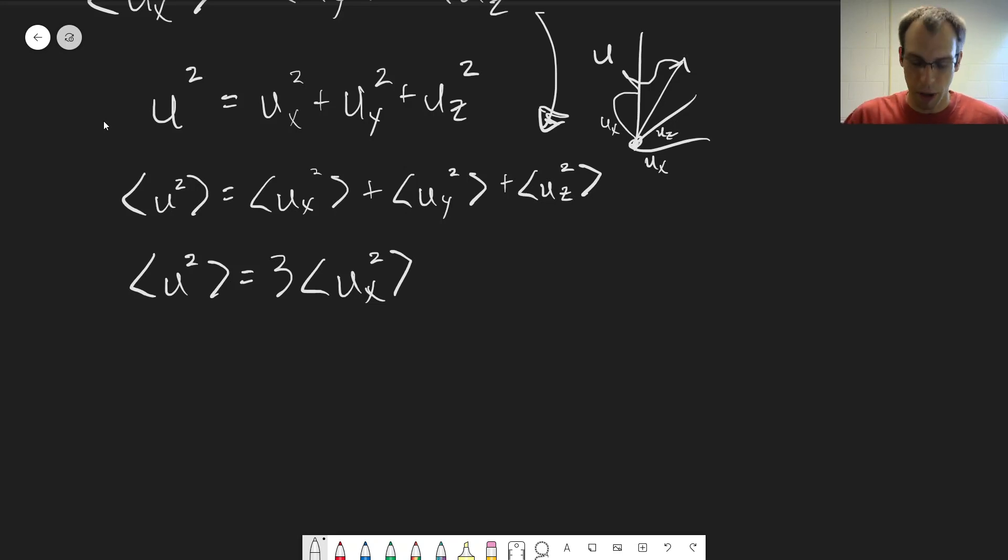That also lets us go the other way around. The equation we have above is in terms of ux squared, the average value of it. So we can say this is equal to one third of the square of the speed, the magnitude of the velocity vector.